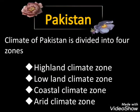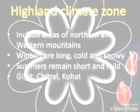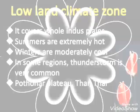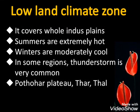The climate of Pakistan is divided into four zones: highland climate zone, lowland climate zone, coastal climate zone, and arid climate zone. The highland climate zone includes the area of northern and western mountains, where winters are long, cool, and snowy, and summers remain short and mild. These areas include Gilgit, Chitral, and Kohat.